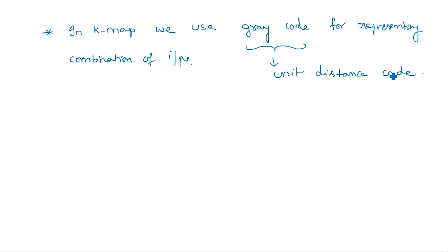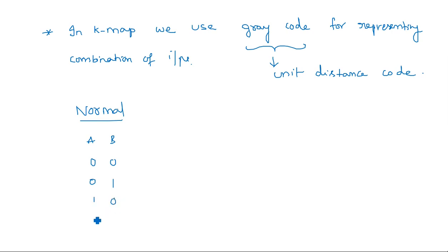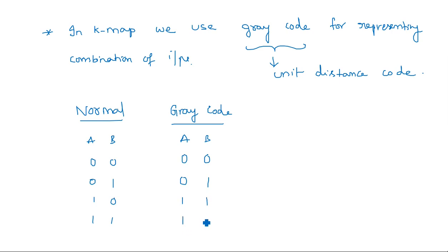Unit distance code means the successive numbers must vary by one unit. In normal binary combination for two variables you write: 00, 01, 10, 11. Whereas in Gray code, which we use in KMAP, we write: 00, 01, 11, 10. So compared to normal representation, 10 and 11 are exchanged in Gray code.